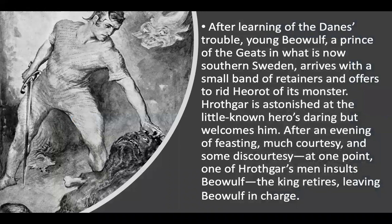After learning of the Danes' troubles, young Beowulf, a prince of the Geats in what is now southern Sweden, arrives with a small band of retainers and offers to rid Heorot of its monster. Hrothgar is astonished at the little-known hero's daring but welcomes him. After an evening of feasting, much courtesy, and some discourtesy — at one point one of Hrothgar's men insults Beowulf — the king retires, leaving Beowulf in charge.